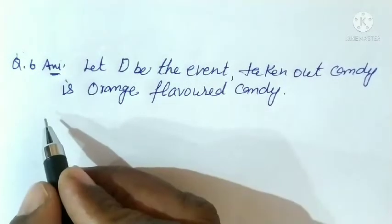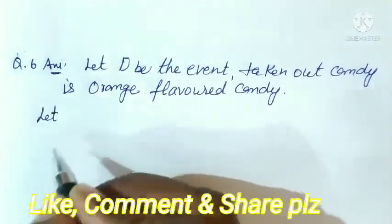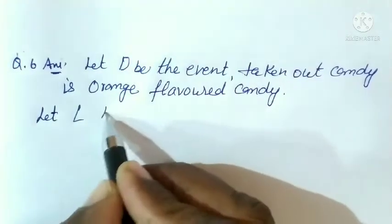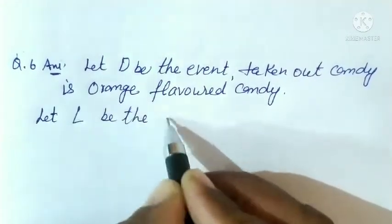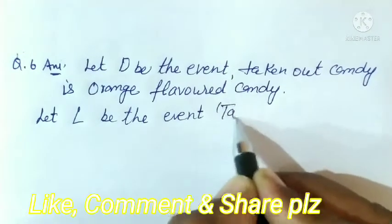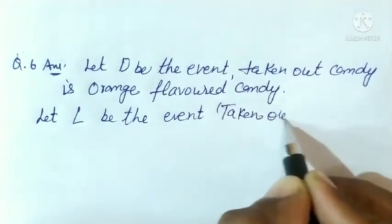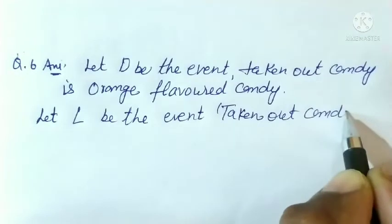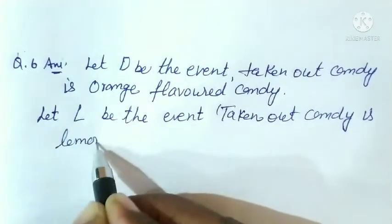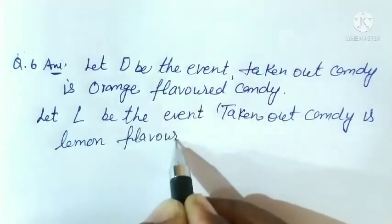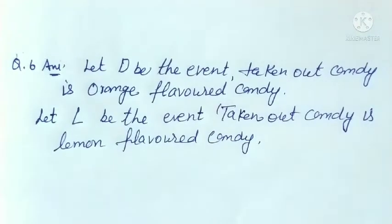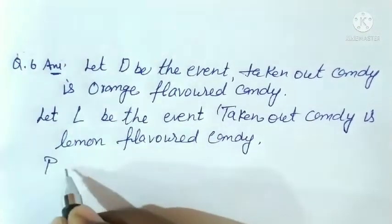दूसरा हम मान लेते हैं। Let L be the event that the taken out candy is lemon flavored। तो lemon flavored candy — हमें यहां पर probability बतानी है।